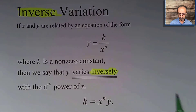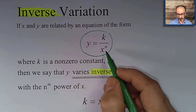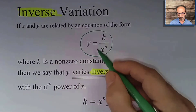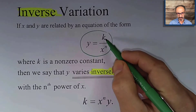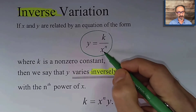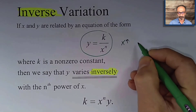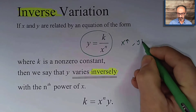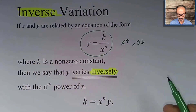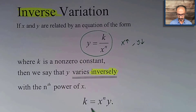Inverse variation: clearly, y equals k over x to the power n — notice x is in the denominator. When the denominator increases, the value of the fraction decreases. For example, 5 over 2, then 5 over 7, then 5 over 12, then 5 over 100 — the fraction value decreases. So as x increases, y decreases. That's called inverse variation, and we say y varies inversely with the nth power of x. To solve for k, cross multiply to get k equals x to the power n times y.